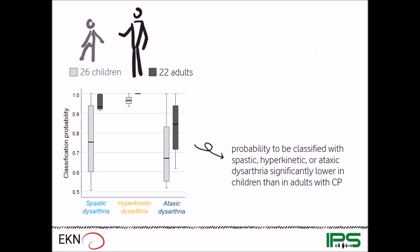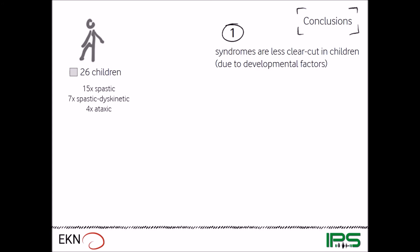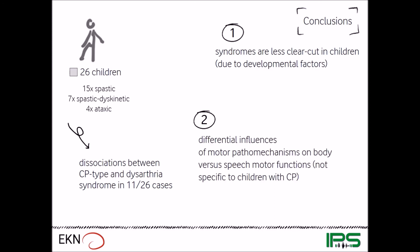Our first conclusion was that syndromes are less clear-cut in children. And since the syndromes were clearly observable in adults with CP who also experienced early brain damage, we assume that this is probably rather due to developmental factors. We also compared the CP types with dysarthria syndromes in the children and we found dissociations in 11 out of the 26 cases. So for instance, we had children with dyskinetic or ataxic CP but with typical patterns of spastic dysarthria. This leads us to conclude that there may be differential influences of motor pattern mechanisms on body versus speech motor functions. And it's very important to note here that this is not specific to children with CP.